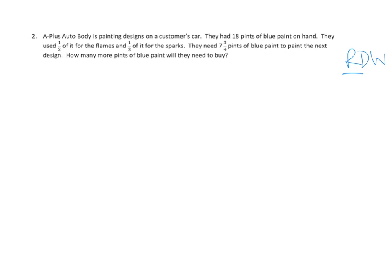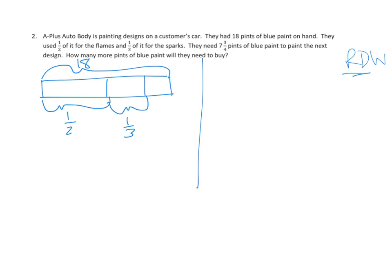So let's go ahead and do a little bit of the draw part of our read, draw, and write strategy. Let's start with the blue paint they had on the first part of the project. We know they had eighteen pints at the beginning. So that's my whole, eighteen pints. They used one half of it for the flames. So that's like that, right? This would be one half, one half of it for the flames. And then one third of it for the sparks. And then later we'll solve the other half of this problem.